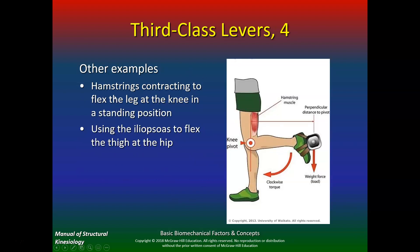Other examples of third class levers include the hamstrings contracting to flex the leg at the knee in a standing position. The iliopsoas flexing the thigh at the hip is another example — many people cheat by decreasing the lever arm and flexing the hip. But if you keep the knee and hip straight, you're really working the hamstrings, even though you won't be able to lift much because third class levers are not very efficient. When you see people compensate at the gym — swinging their body to do biceps curls — they're trying to increase their mechanical advantage.